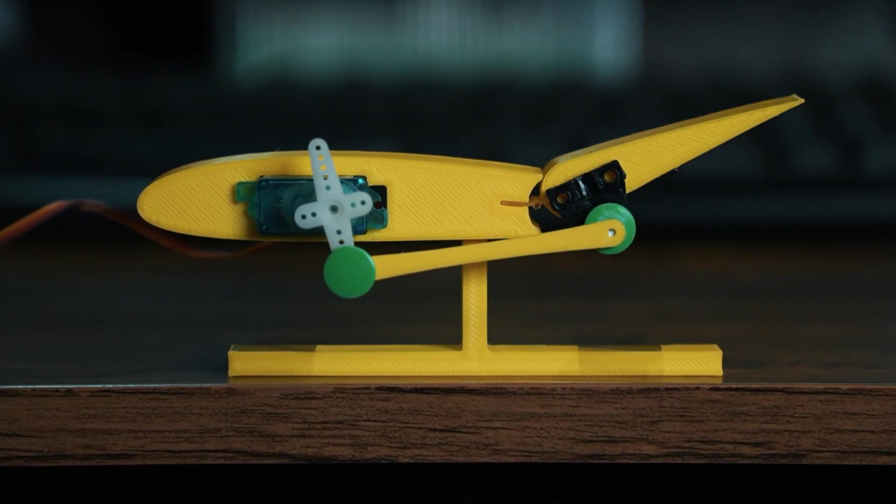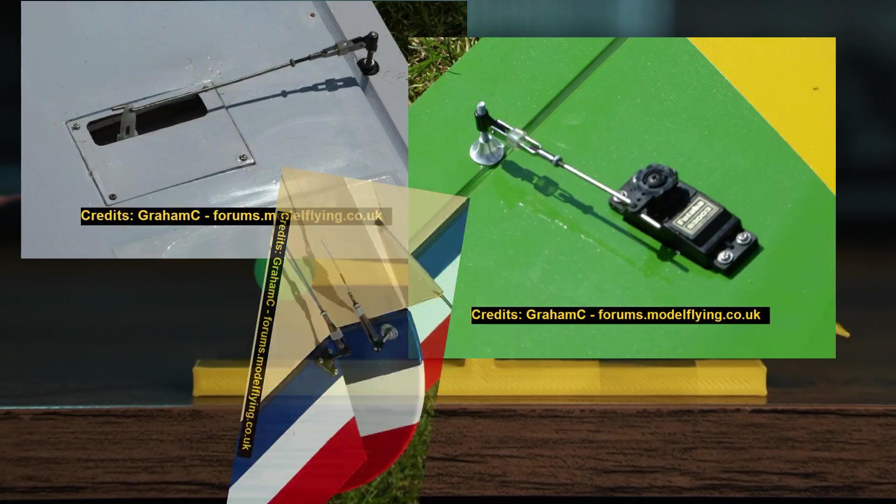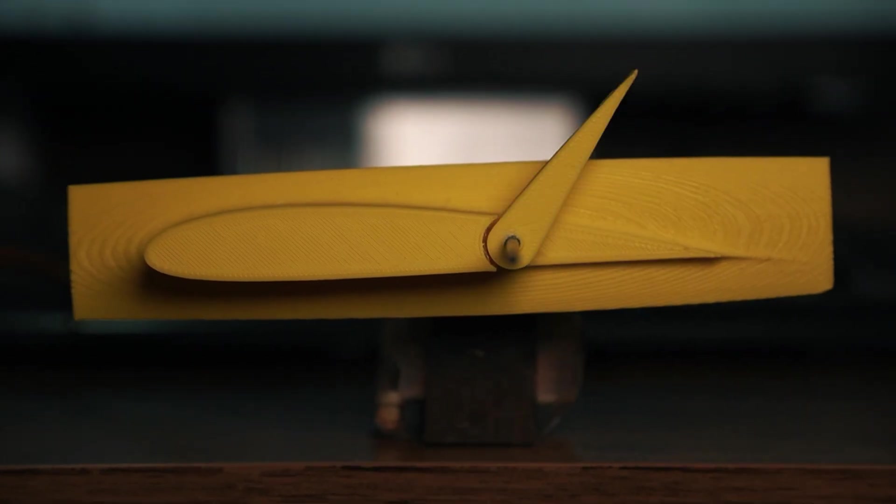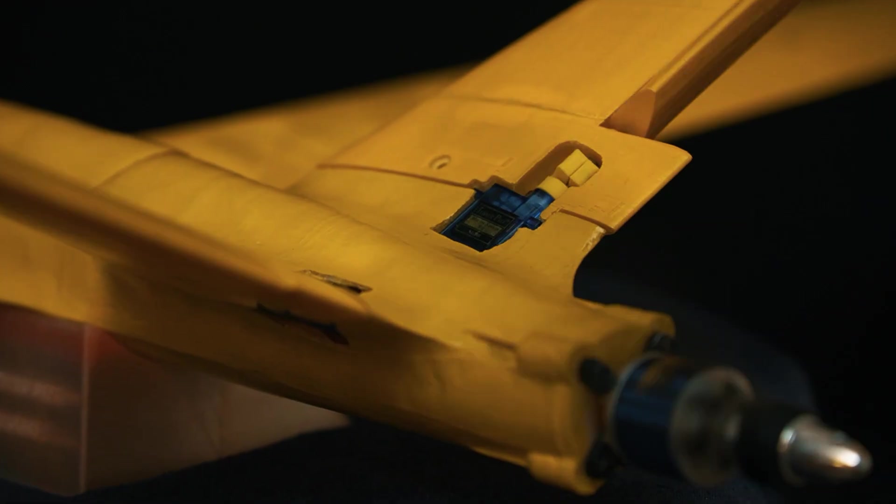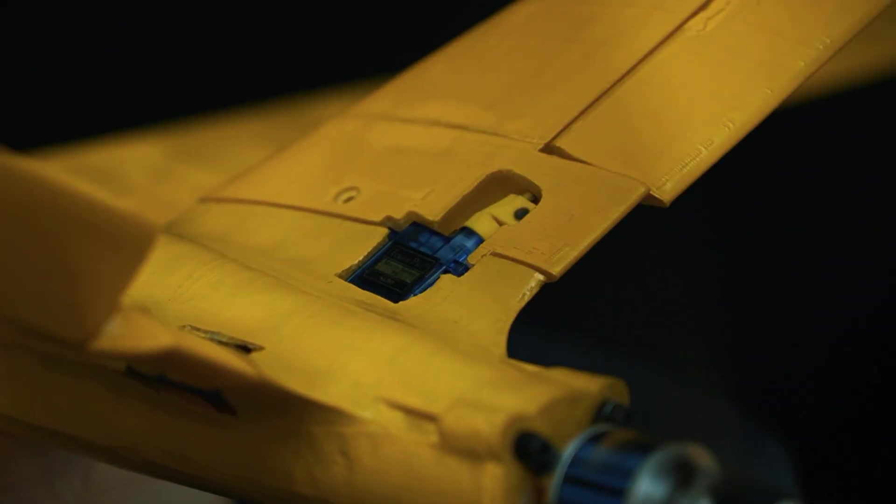Almost every RC plane we have seen so far had servo linkages like this. However, you can connect the servo shafts directly to the control surfaces and that's what I've done in my 3D printed RC plane. Let's find out why, how, and what's the difference.